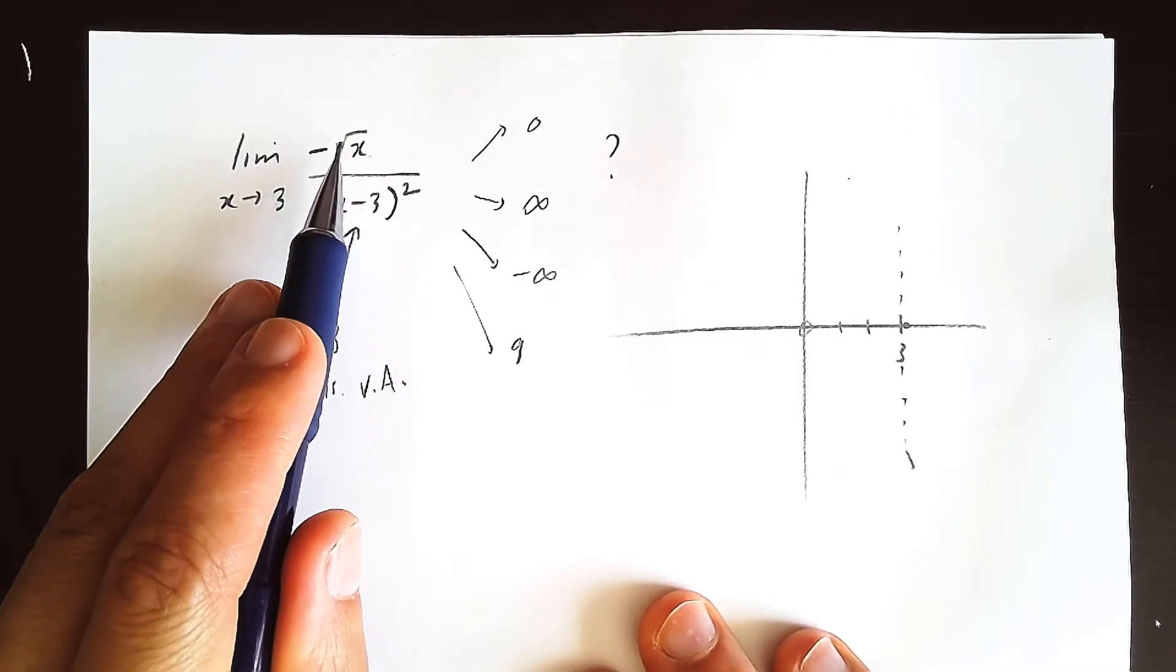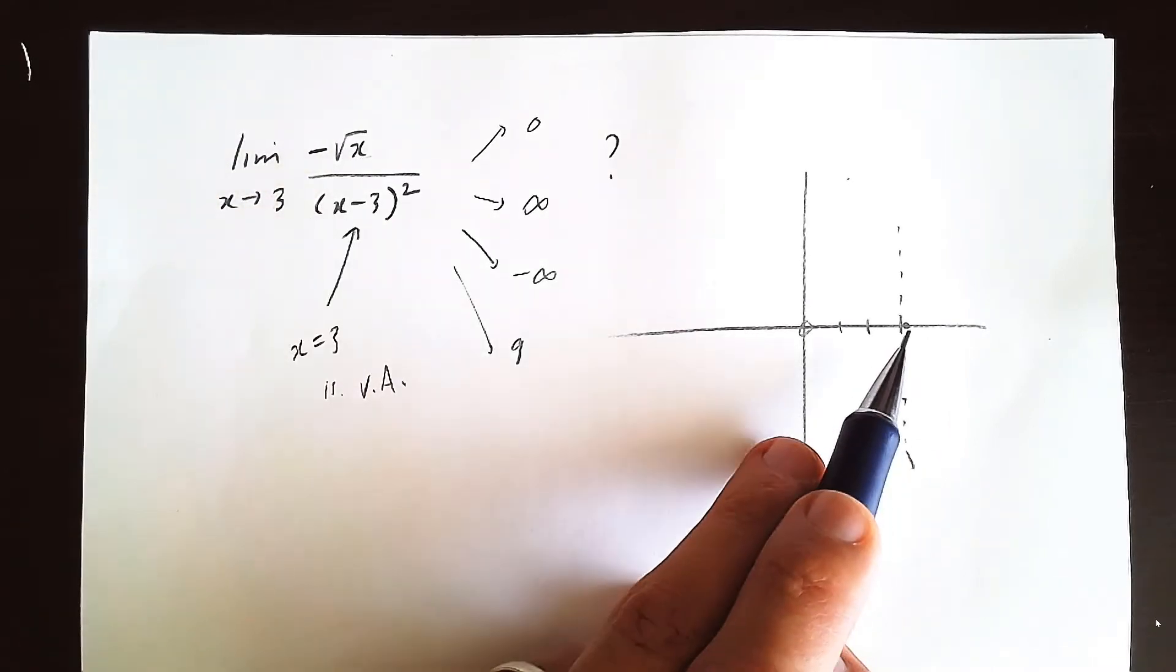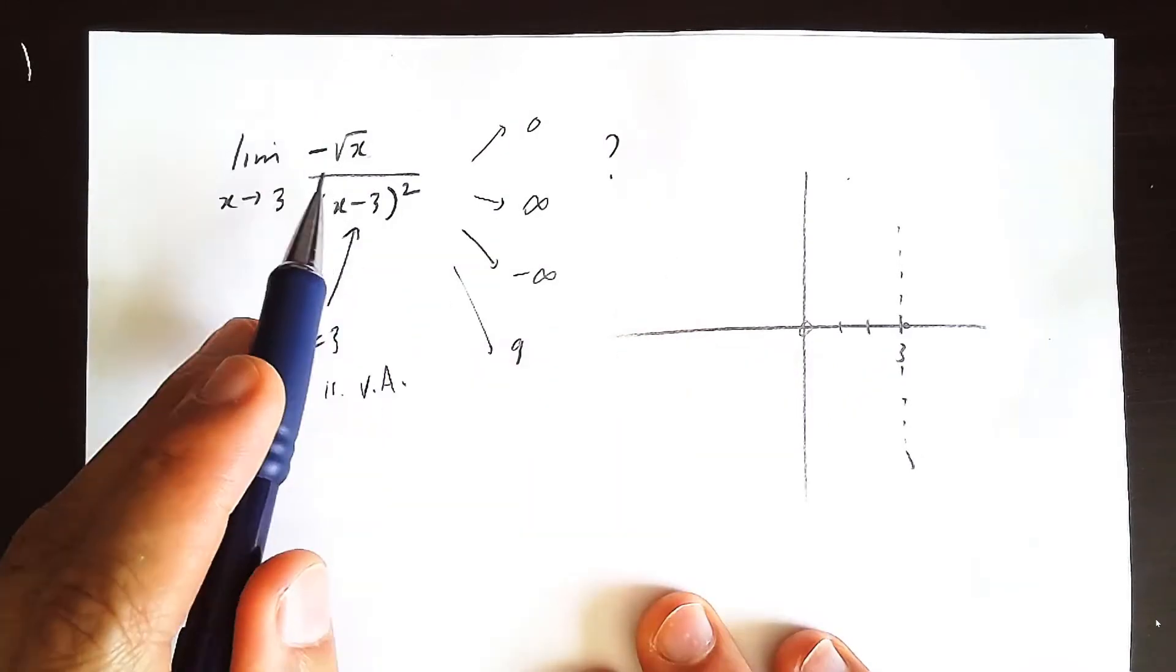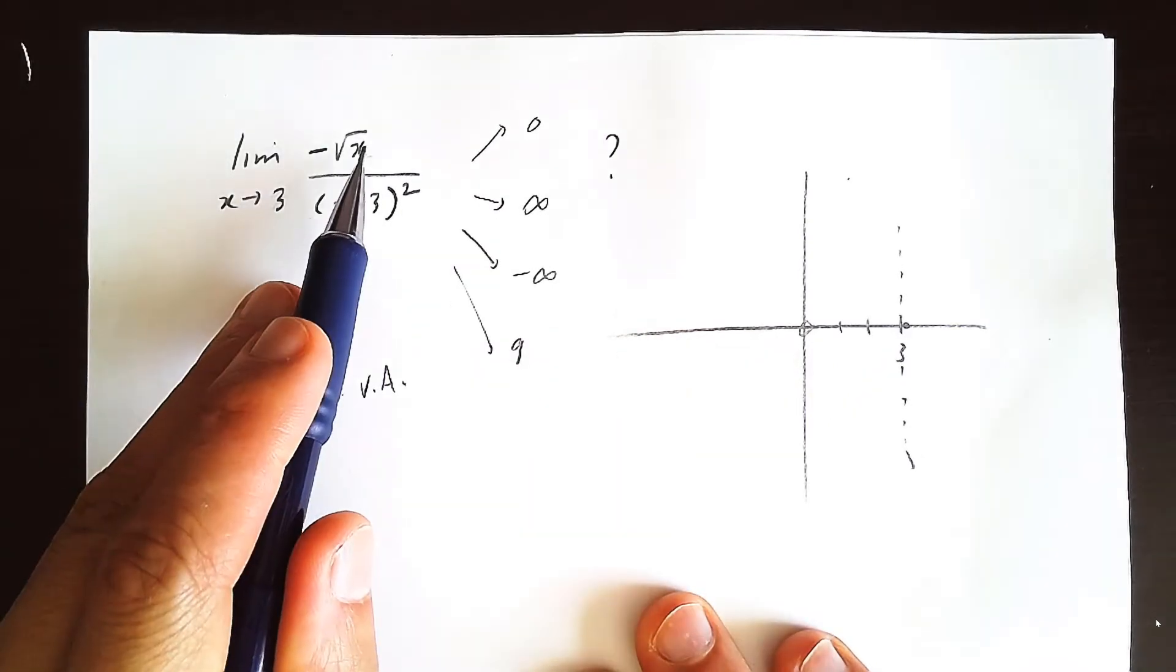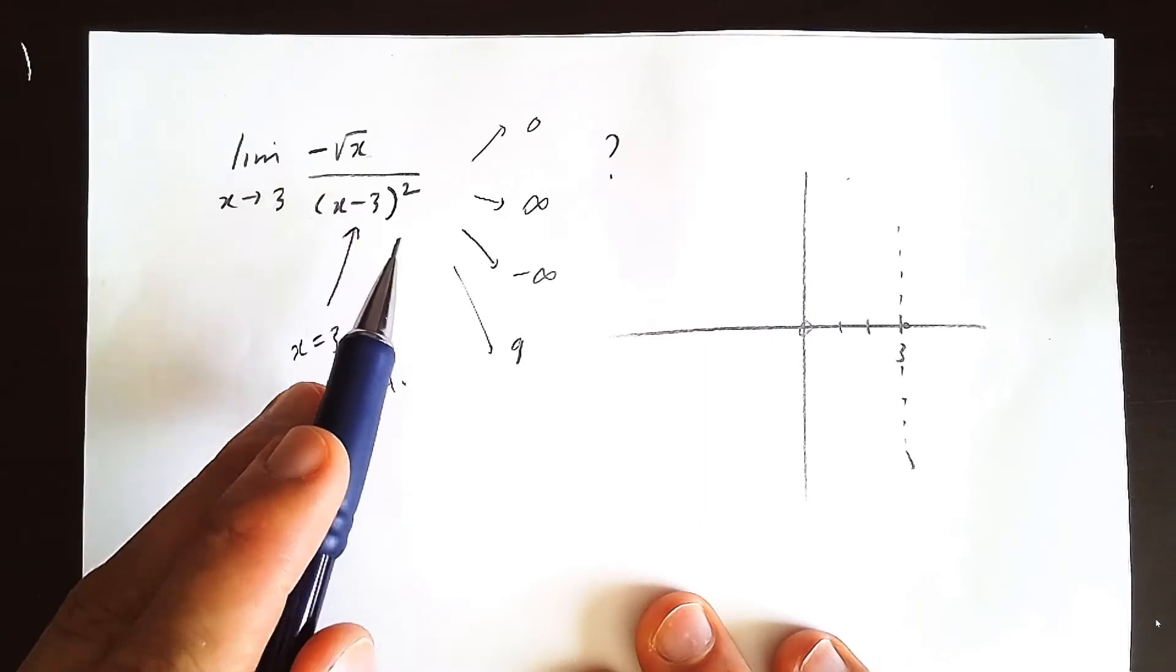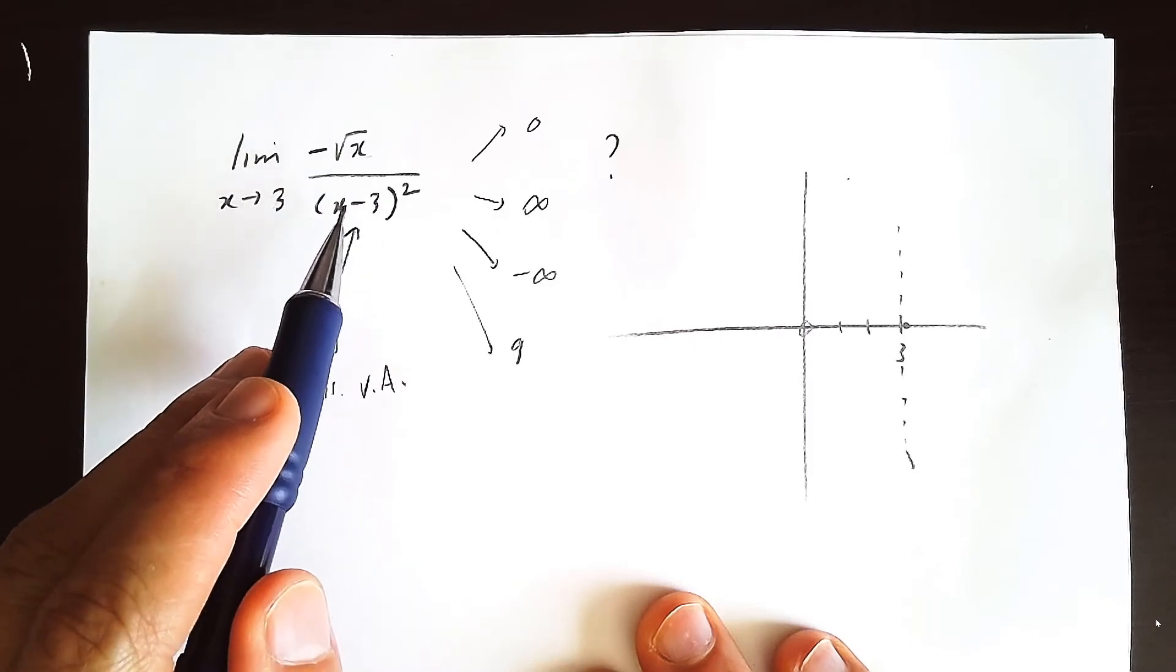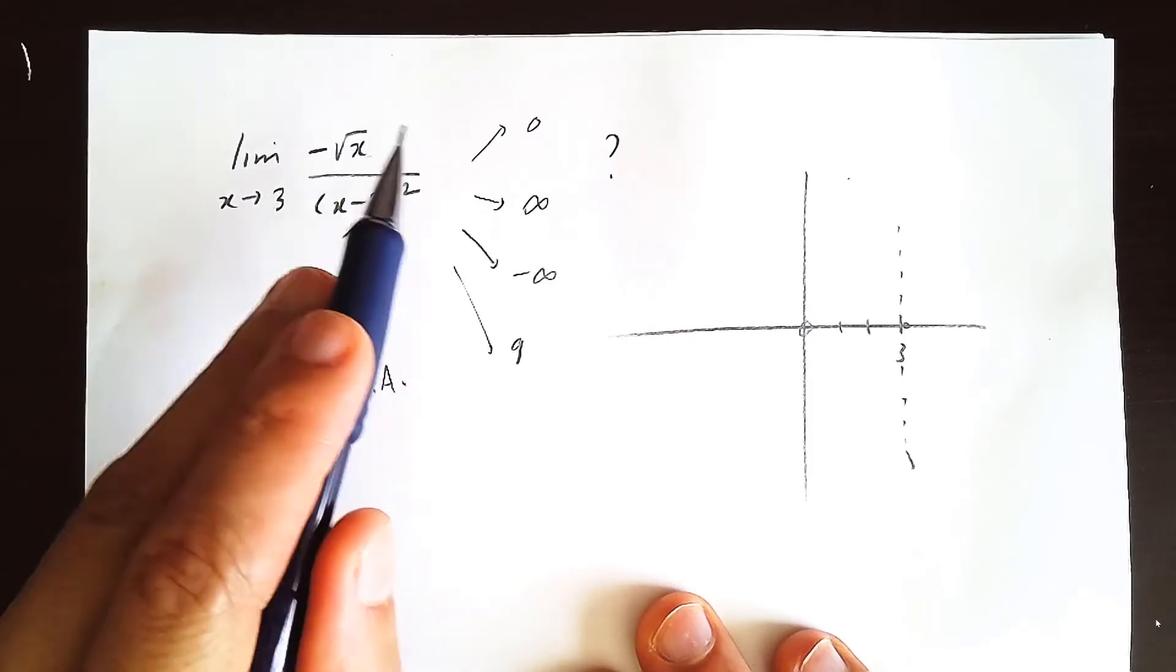That very small number squared is still positive, but imagine the numerator now. The square root of that x value, which happens to be 3.00001, is going to be negative some number divided by a very, very small number. So negative some number divided by a very small number is going to be negative some large number.